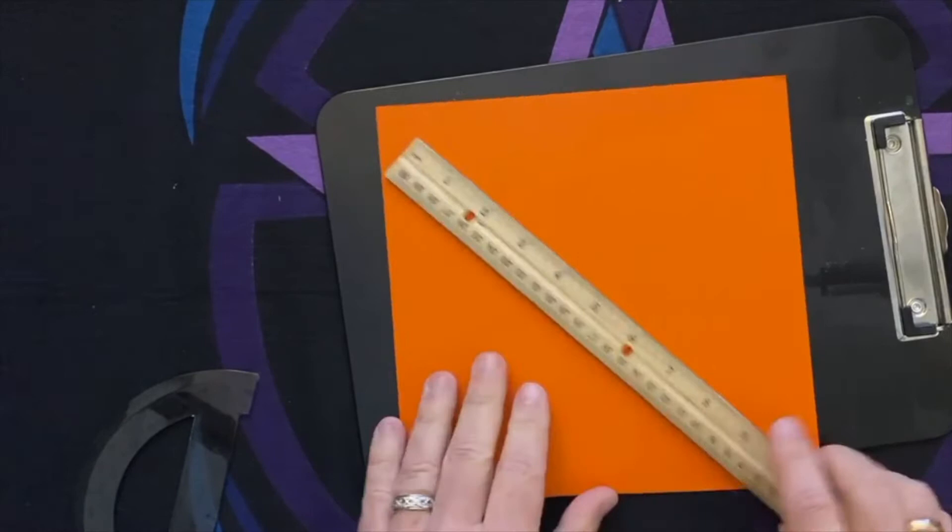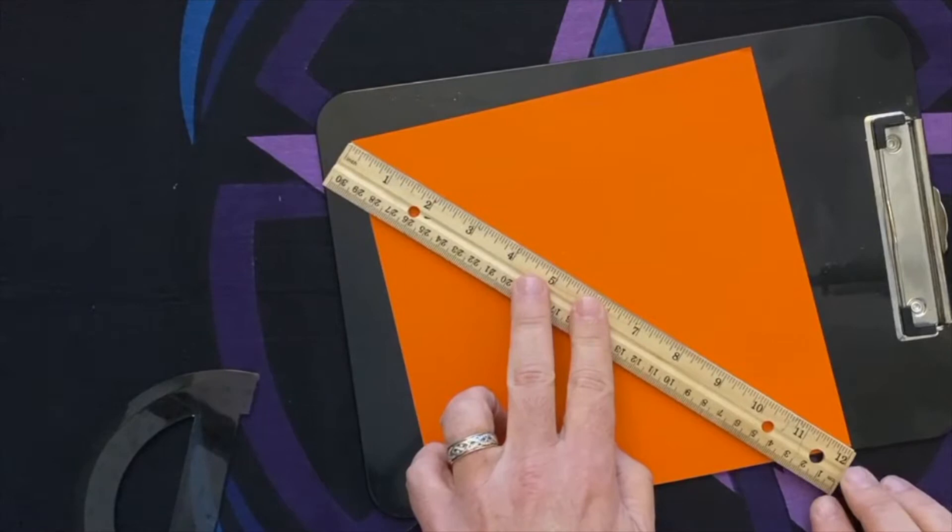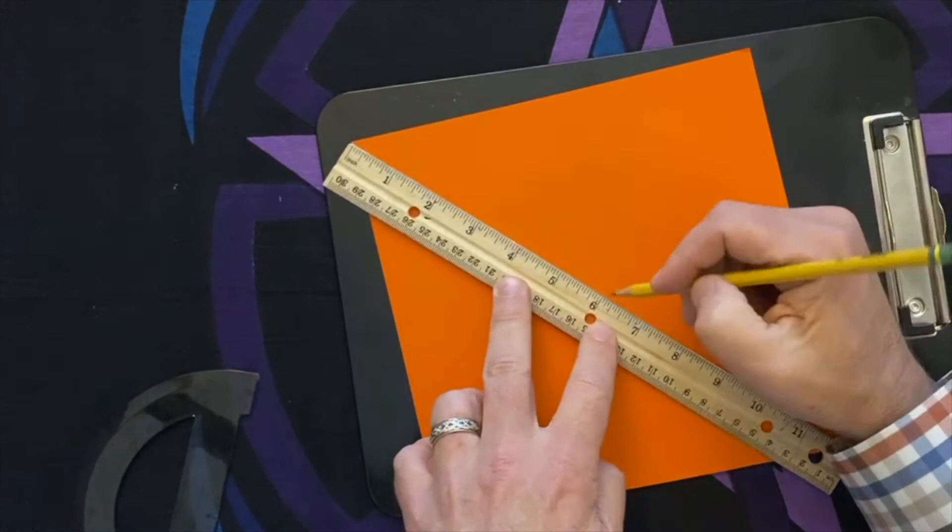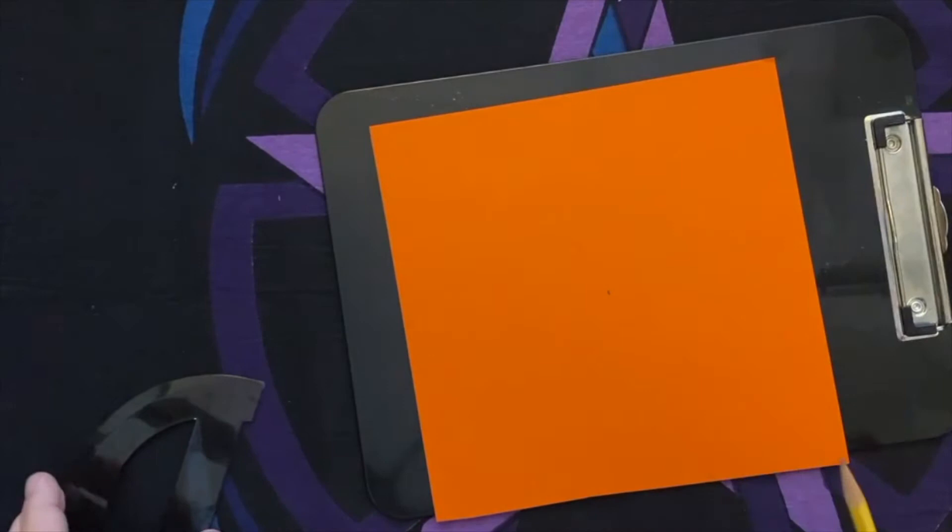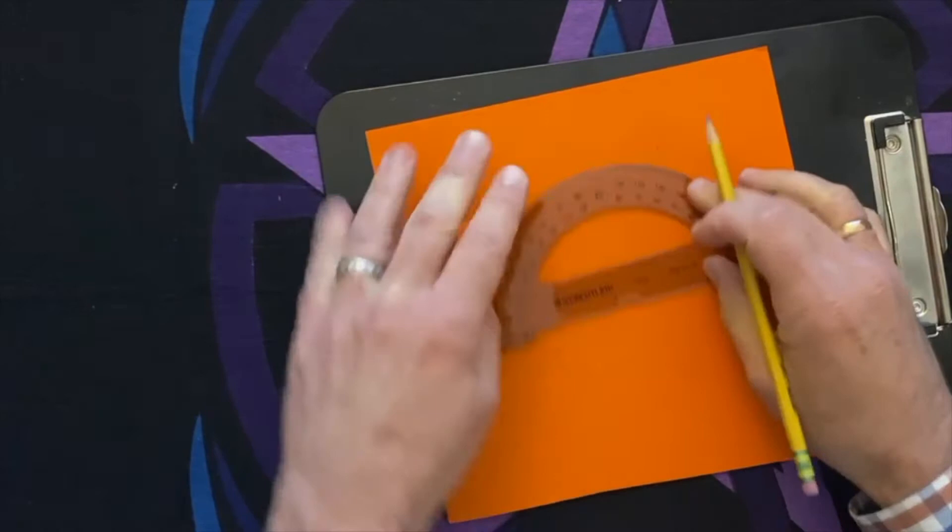I have a square of orange cardstock. I've just cut this to eight and a half inches square. The first thing we'll want to do is find the center point of the square. Then we'll take our protractor and mark a dot at the 120 degree point three times.